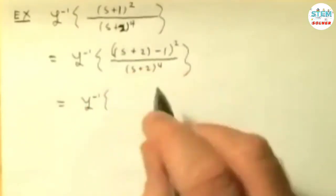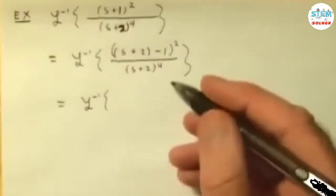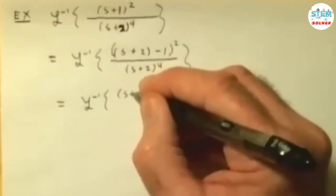What I would do from here is multiply off the top, leaving the s plus 2 as it is, right? You don't want to distribute it, because then I'm back to where I was. So if I square that, what you would have is this.